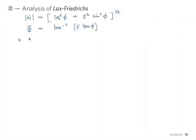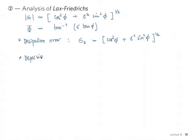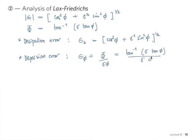We get a dissipation error equal to the modulus of G, and the dispersion error is equal to the numerical phase divided by sigma phi — so arc tan of sigma tan phi, divided by sigma phi. We have a plot of these errors with respect to the phase angle for different values of sigma, which we can look at to see how this scheme behaves.